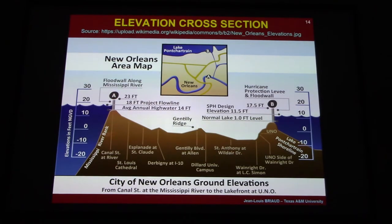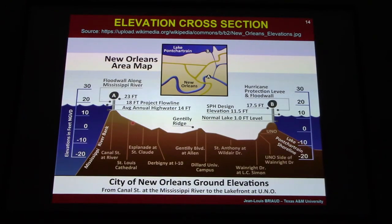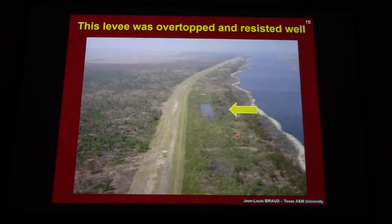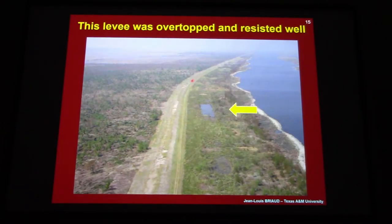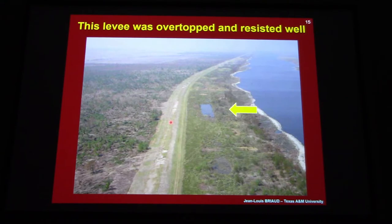Here is a cross-section of New Orleans. You have the Mississippi River here, Lake Pontchartrain on this side, and the levees at A and B. Basically New Orleans is built at the bottom of a bathtub. The first settlers built on fairly high ground and as time went by people expanded into lower and lower areas. Here is an example of a levee - the water came from the Gulf side, overtopped the levee, but overall this levee resisted very well.